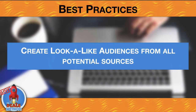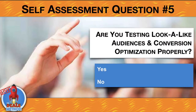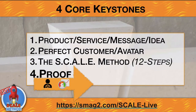Best practices: create a lookalike audience from all potential sources. Lookalike audiences and proper conversion optimization will provide you scale. Self-assessment question number five: are you testing a lookalike audience and conversion optimization properly? If not, there's no judgment — but as you start looking at these self-assessment questions, it can really show you where you need to be improving on your marketing next.